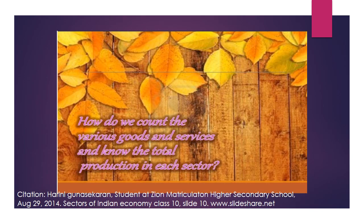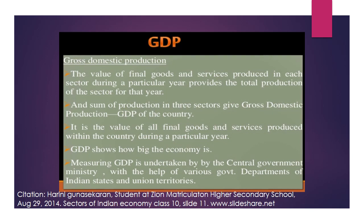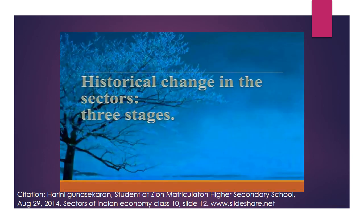How do we count the various goods and services produced across the sectors? This is known as GDP — Gross Domestic Product. GDP is the sum of production of all three sectors. Only the final goods and services produced within a particular year are counted as the gross domestic product of that country.